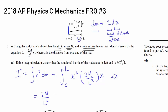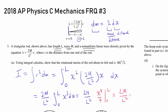We get 2M over L squared times the integral from zero to L of X cubed DX, which equals 2M over L squared times X to the fourth over four evaluated from zero to L — also known as 2M over L squared times L to the fourth over four. When you simplify, you get ML squared on top and 2 below. So we have shown that it's ML squared over 2.